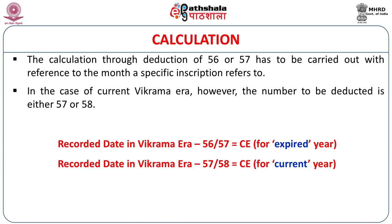In the case of a current Vikrama era, the number to be deducted is 57 or 58. Thus the recorded date in Vikrama era inscription minus 56 or 57 equals the common era. Similarly, the recorded date of an inscription in Vikrama era minus 57 or 58 comes to the common era in the case of current reckoning.